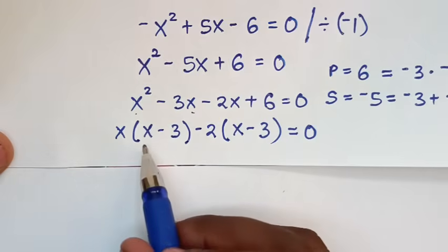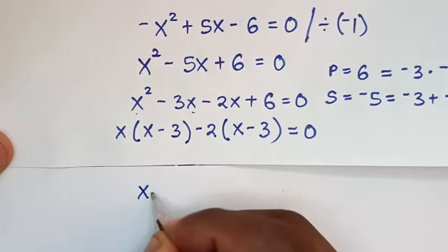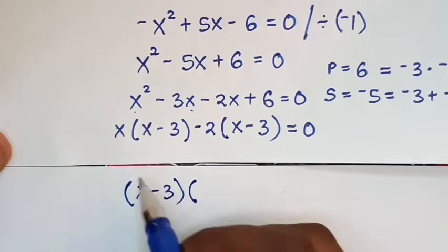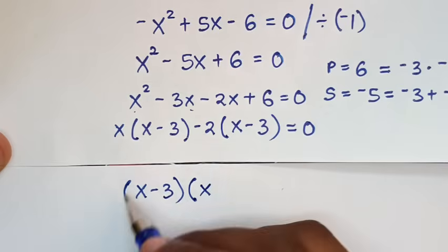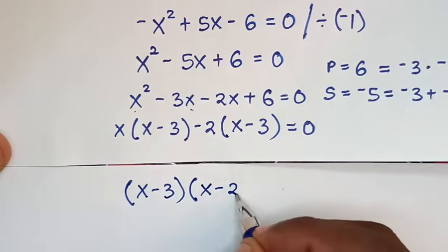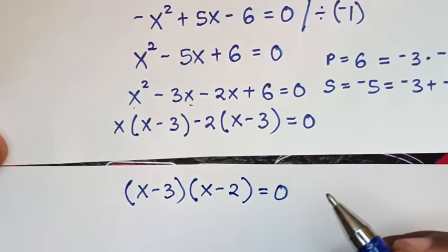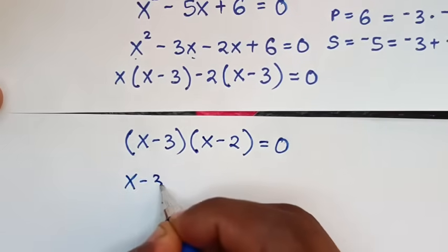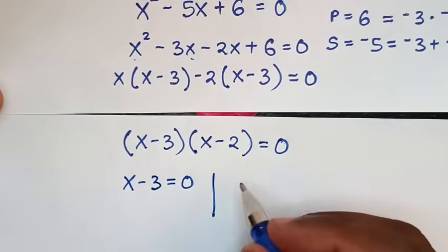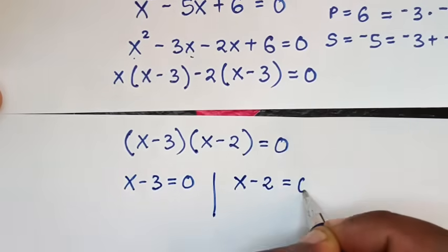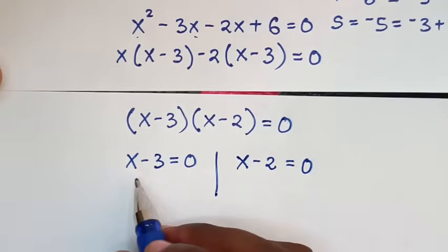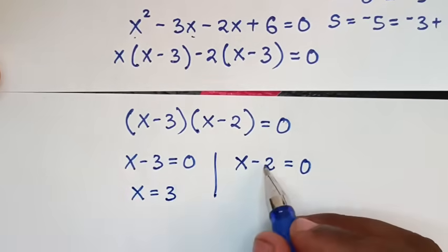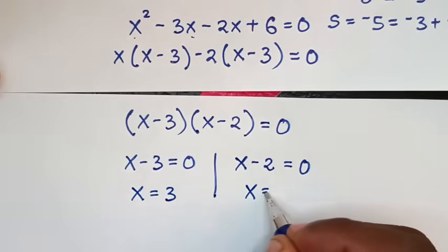Then in the next step, from here x minus 3 is common, so we take x minus 3 outside the bracket. So here this divided by this is x, this divided by this is negative 2, bracket, is equal to 0. So from here we have two solutions: x minus 3 is equal to 0, and x minus 2 is equal to 0. Into the first solution, x is equal to 3; into the second, x is equal to 2.